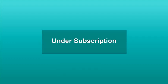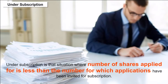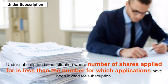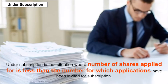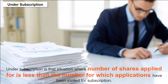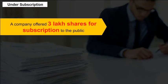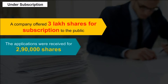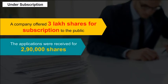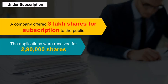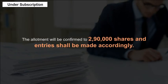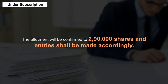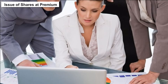Under Subscription: Under subscription is the situation where the number of shares applied for is less than the number for which applications have been invited. For example, if a company offered 3 lakh shares but received applications for only 2 lakh 90,000 shares, then allotment will be confirmed to 2 lakh 90,000 shares and entries shall be made accordingly.